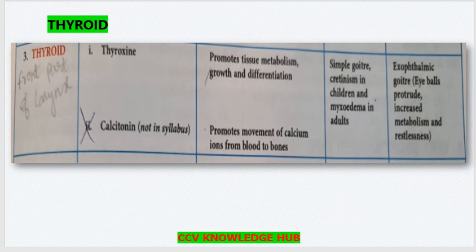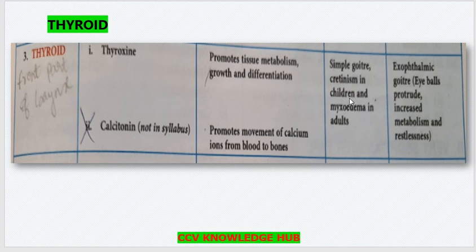The next important gland is the thyroid. Thyroid releases two hormones: thyroxine and calcitonin. The main function of thyroxine is promoting tissue metabolism and growth and differentiation. Under-secretion causes simple goiter, cretinism in children, and myxedema in adults. Over-secretion causes exophthalmic goiter — where eyeballs protrude — along with increased metabolism, restlessness and tremors. Calcitonin promotes movement of calcium ions from blood to bones.